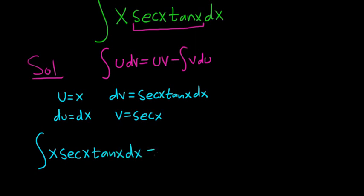Okay, that's equal to uv, so it'll be x secant x minus the integral of v du. So that's simply going to be the integral of secant x dx.